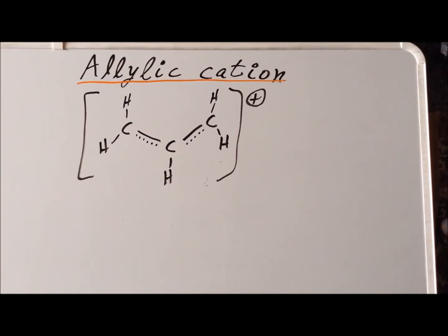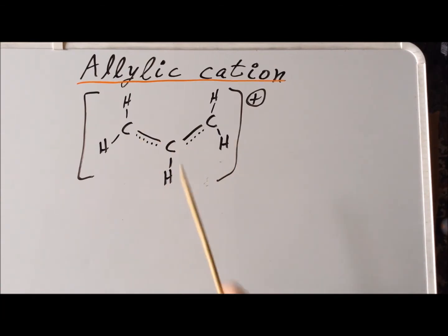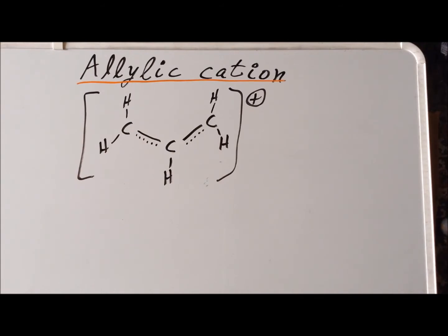Please see the following two figures to see computed three-dimensional structures of the allyl cation — first from the top, and second edge-on — to show that it is, in fact, planar.